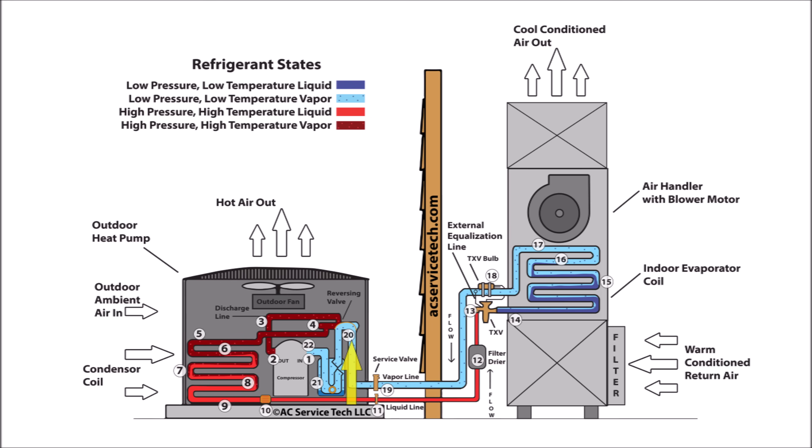In step twenty, you have the low pressure, low temperature, superheated vapor traveling through the reversing valve and into the accumulator tank. In step twenty-one, the vapor travels through the accumulator, whose job is to protect the compressor by preventing any unwanted liquid from entering the compressor inlet. At the bottom of the accumulator tank, there's an oil return metering device that allows oil and any liquid refrigerant gathered there to re-enter the vapor line. Any liquid refrigerant that enters that metering device quickly gets flashed into a saturated state and turns into vapor before reaching the compressor. Typically in air conditioning mode, there's not much liquid in the accumulator tank, but in heating mode, there may be some liquid refrigerant present.